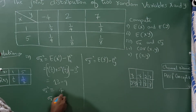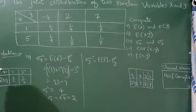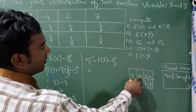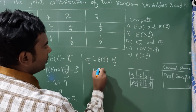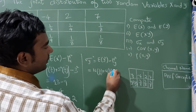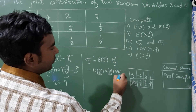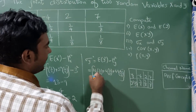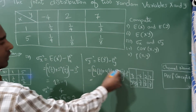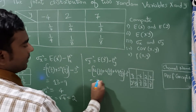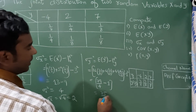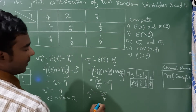Taking the square root, σ_X = √4 = 2. For E(Y²): (−4)² · (3/8) + (2)² · (3/8) + (7)² · (2/8) = 16(3/8) + 4(3/8) + 49(2/8). This gives 79/4. Then σ_Y² = 79/4 − 1² = 75/4, so σ_Y = √(75/4) ≈ 4.33.